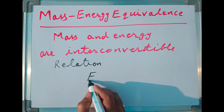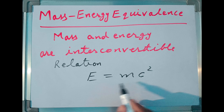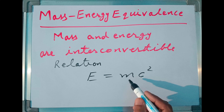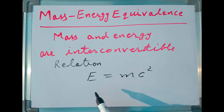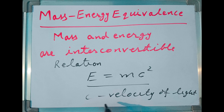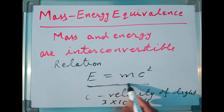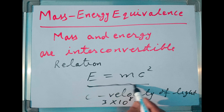The relation for this principle is E = mc². This means if we have mass m, it can be converted into energy of an amount given by this relation, where c is the velocity of light in vacuum — a constant value of 3 × 10⁸ meters per second. This relation is called Einstein's mass-energy equivalence relation.